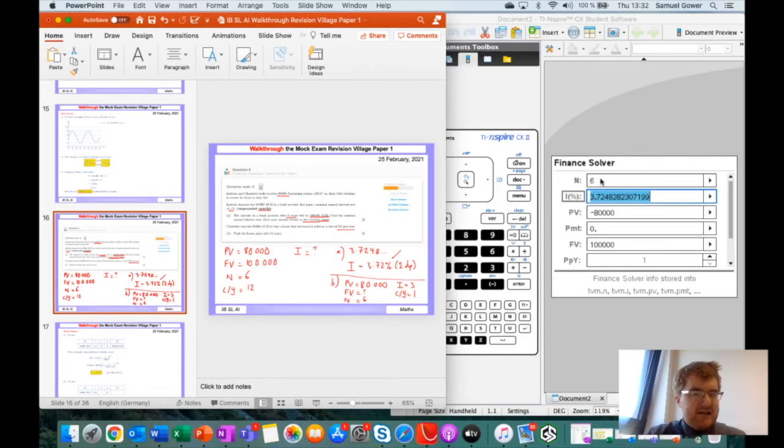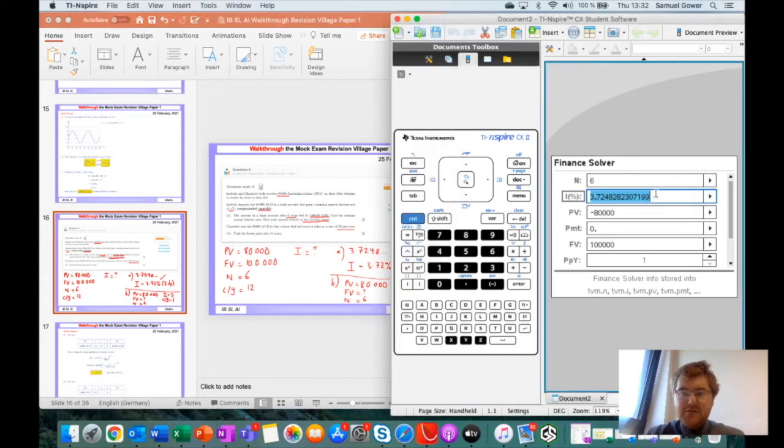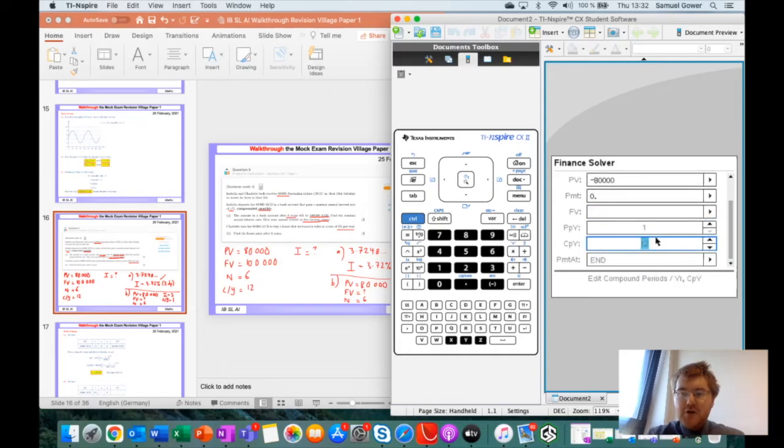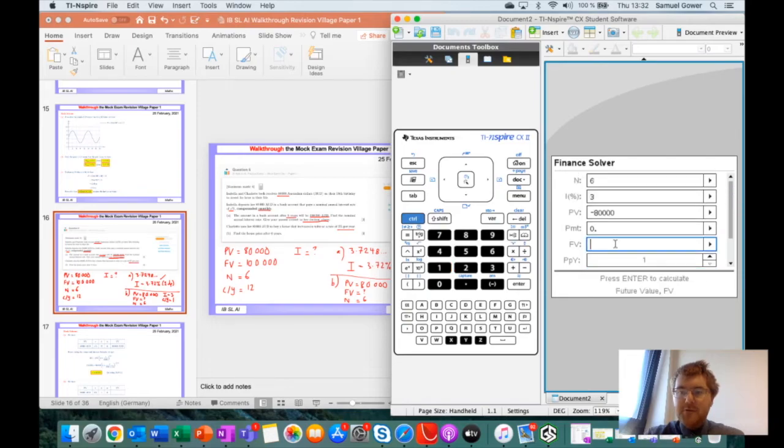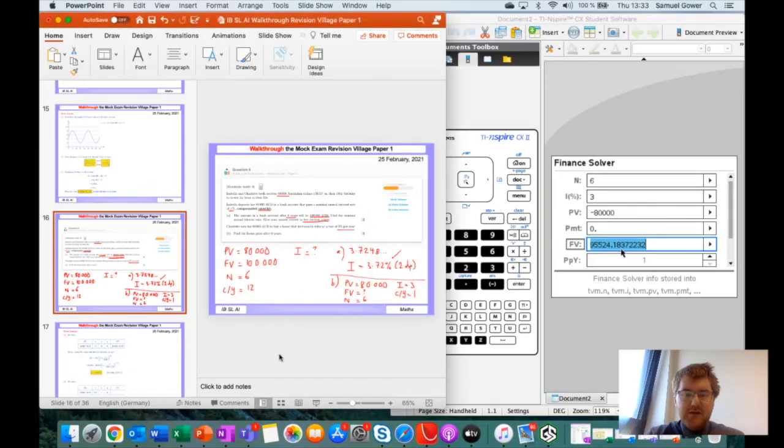Let's put this information in. Six stays the same. Interest rate is three. Minus 80,000 stays the same. We need to change our compounding to one. Now we press enter where we have final value, and then we get the answer of 95,524.18.